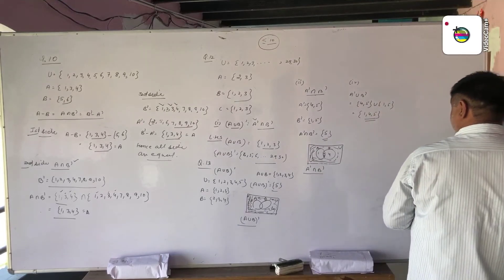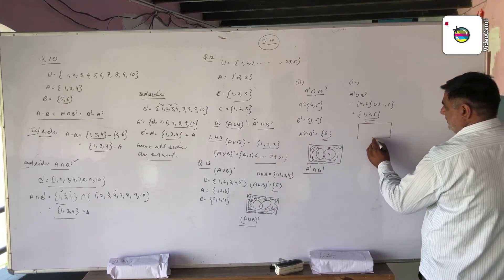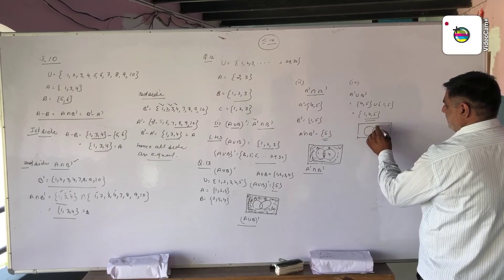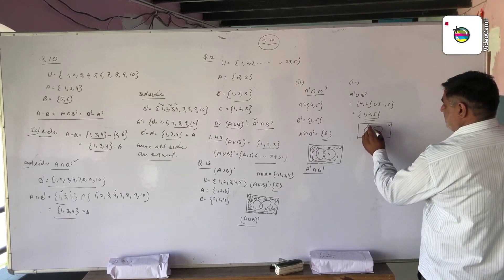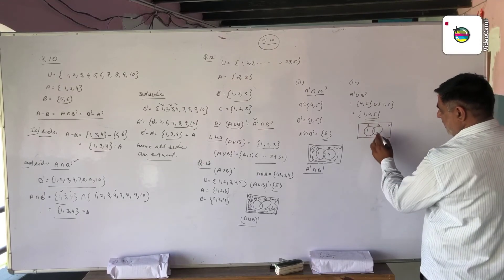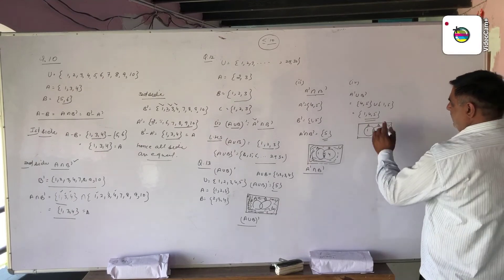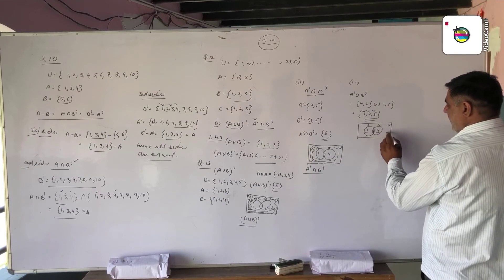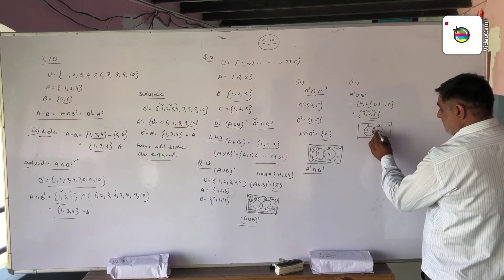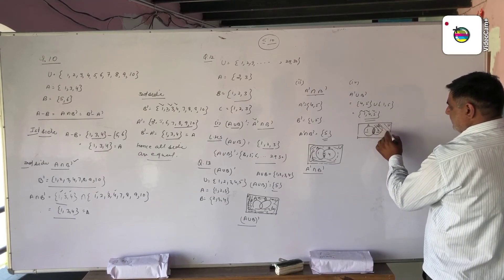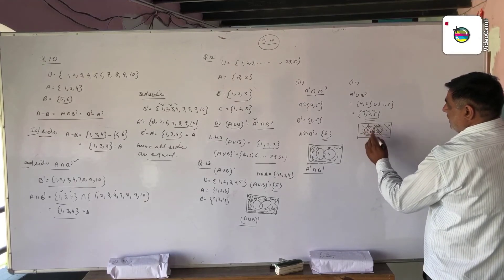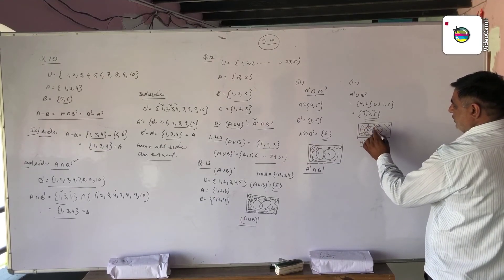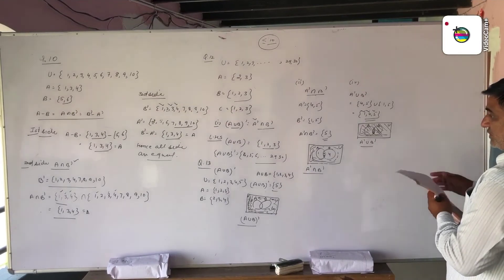Now we show the Venn diagram. This is set U, this is set A, this is set B, these are the common elements of A and B. We dark all regions except the common intersection region — this is the Venn diagram of A' union B'. In the last questions of this exercise, we use Venn diagrams.